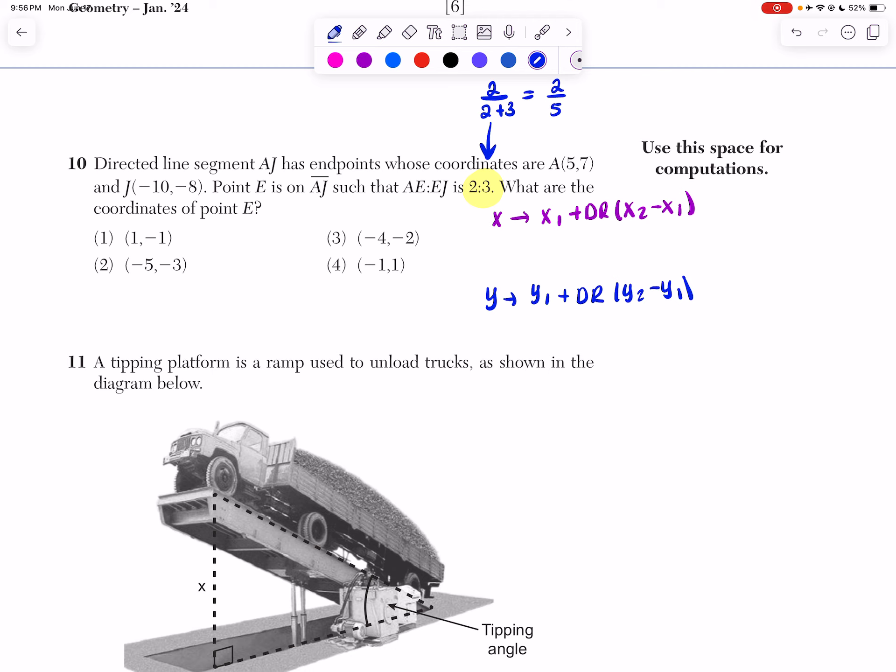So now what I'm going to do is basically plug into my points. So I know my first X value is 5. And yes, you have to use this specific ordering. You can't start with the negative 10. So I'm going to do 5 plus my distance ratio, which is 2 fifths, and then do in parentheses my second X value minus my first X value. So now I'm going to do negative 10 minus 5.